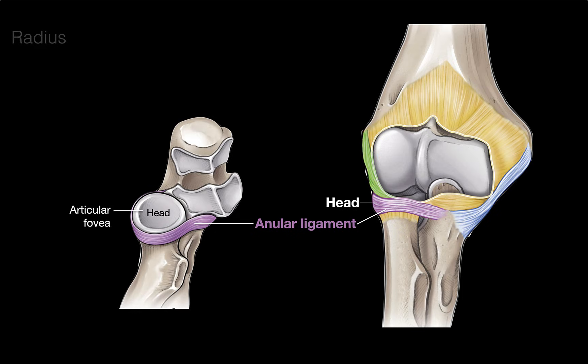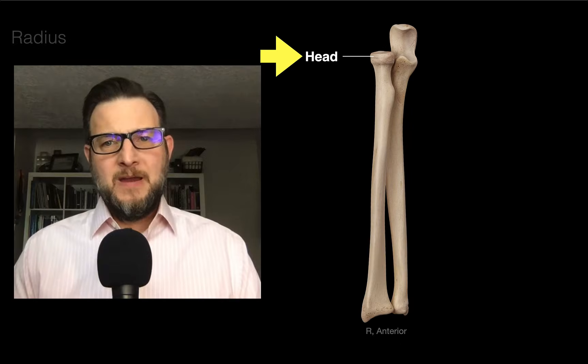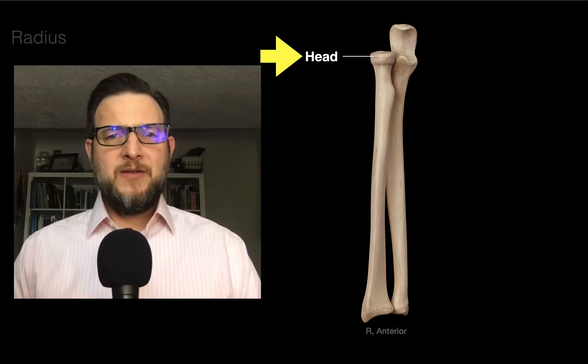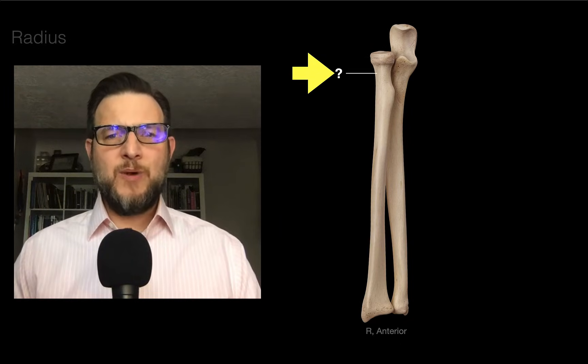I also show the articular fovea, because that's the part that pushes up and articulates with the capitulum of the humerus. And there is the head of the radius.